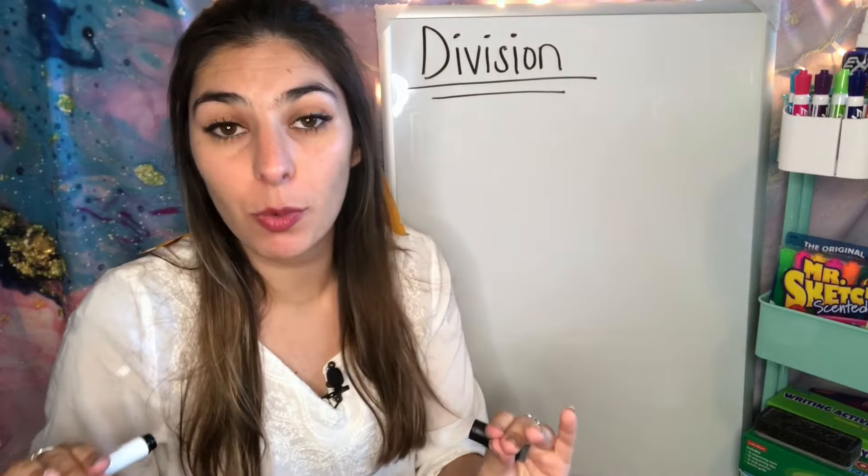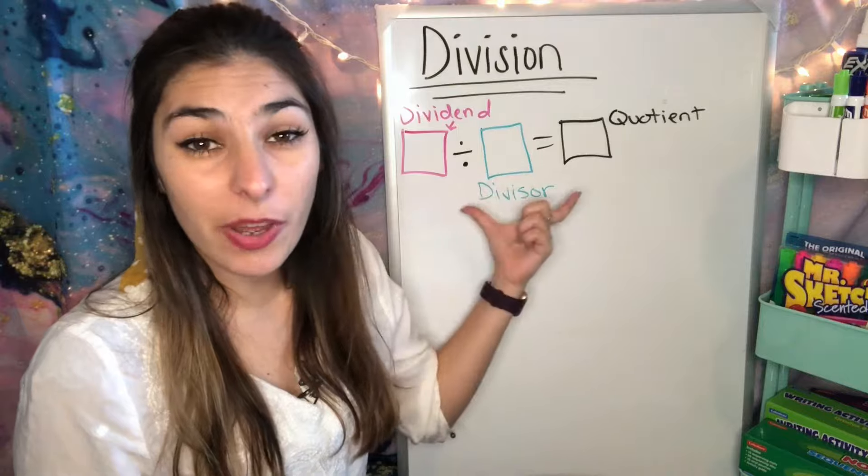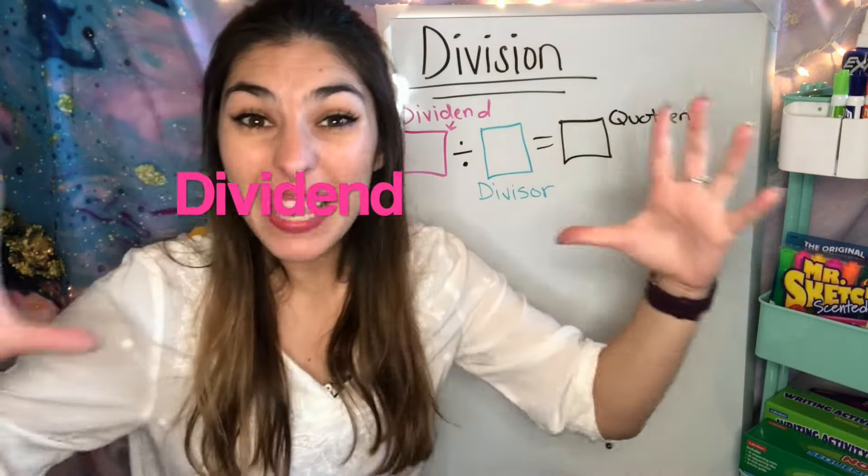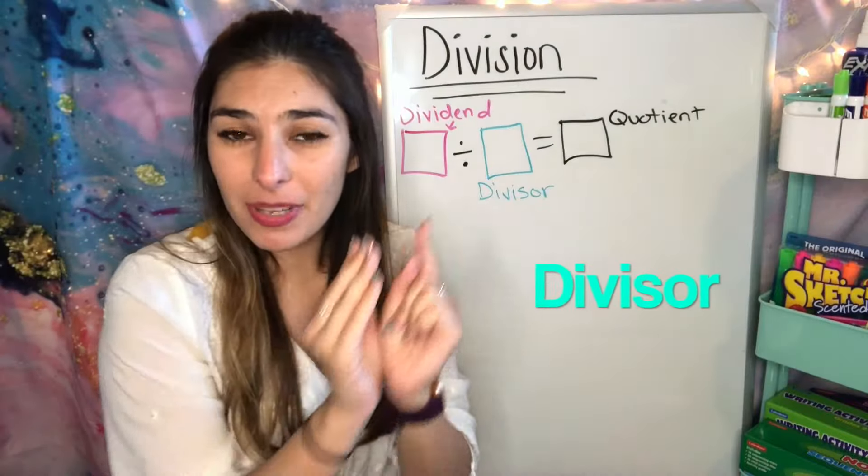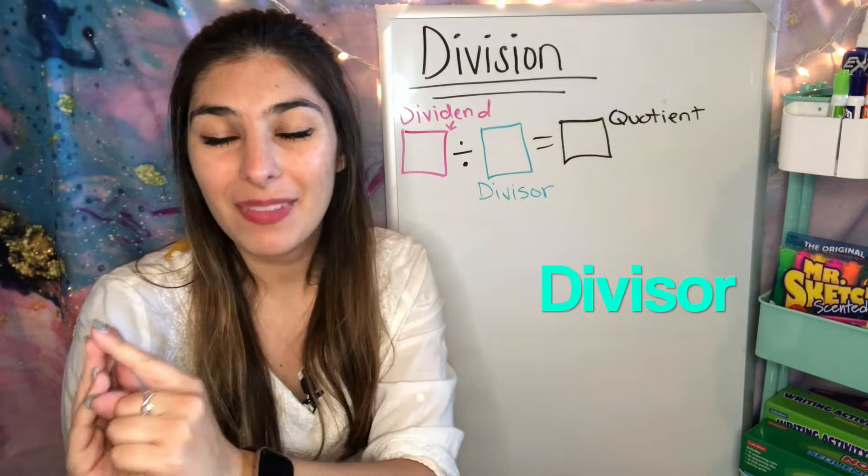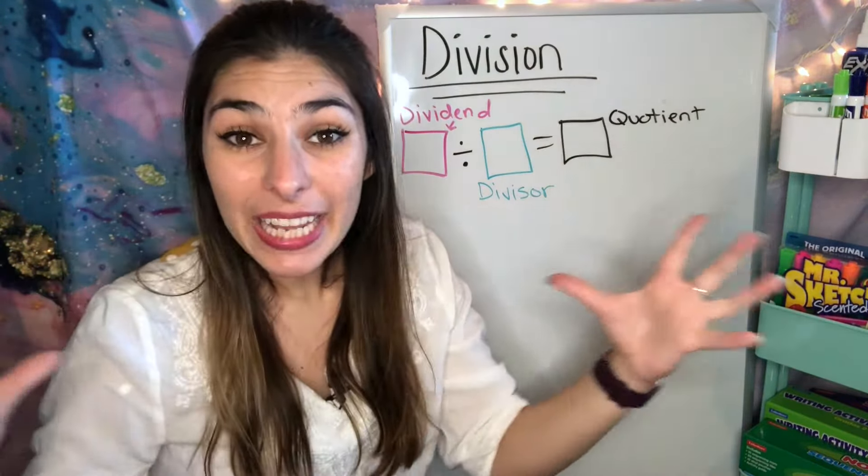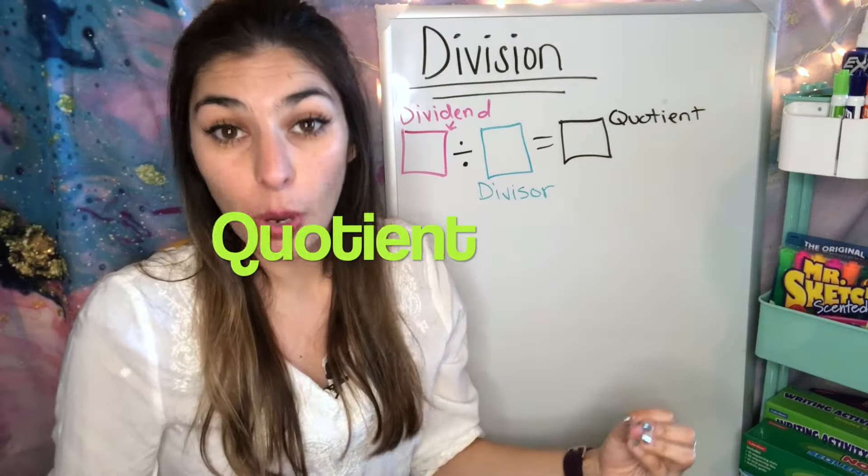First off, let's go over the terms that we're going to be using throughout division. This is what our equations are going to look like. The big number that we're dividing up is the dividend. Then the small number that we're dividing by is the divisor. Then our answer, the number that we get at the end, is the quotient.